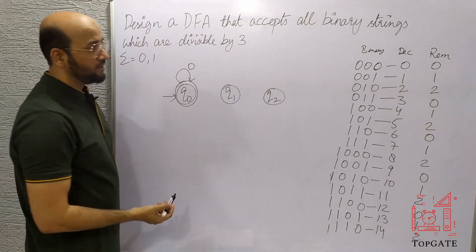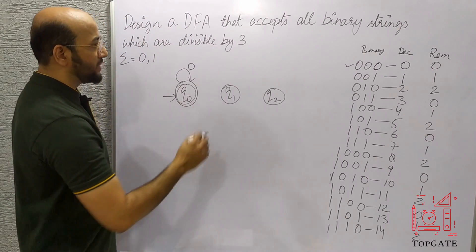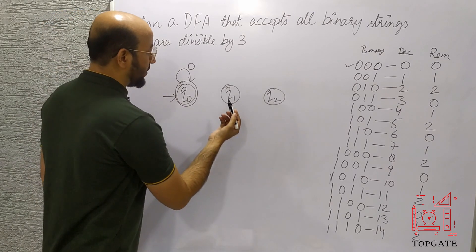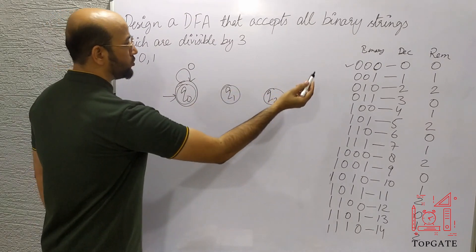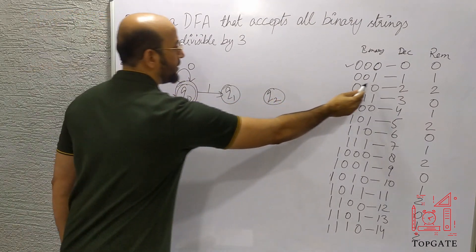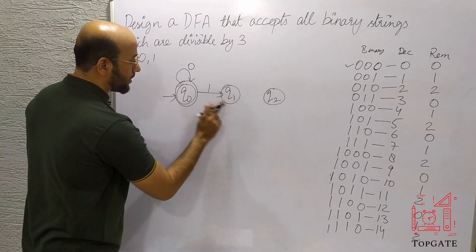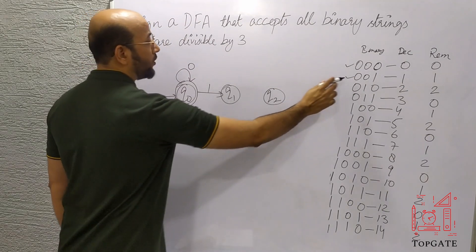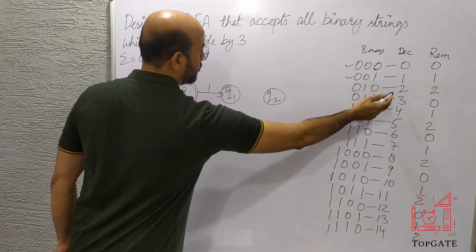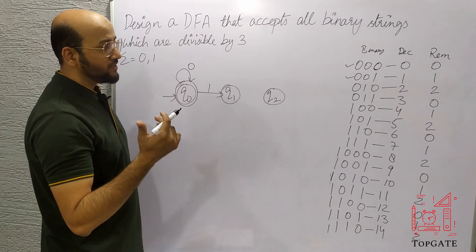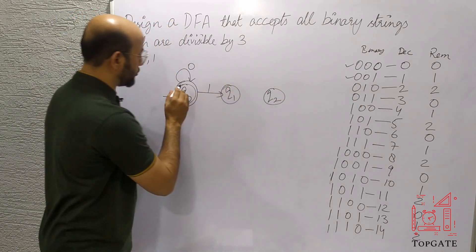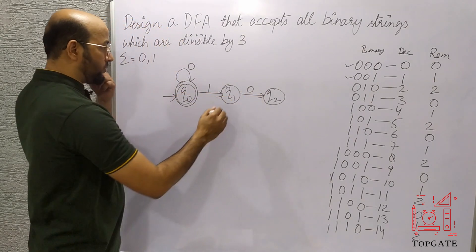So 000 is accepted. Next, 001 in binary is 1 in decimal, and the remainder when dividing 1 by 3 is 1, so from q0 reading 001 we go to q1. This condition is satisfied and it is correctly not accepted. Next, 010 in binary is 2 in decimal, and 2 divided by 3 gives remainder 2, so we should come to state q2. Reading 0, then 1, then 0 brings us to state q2.